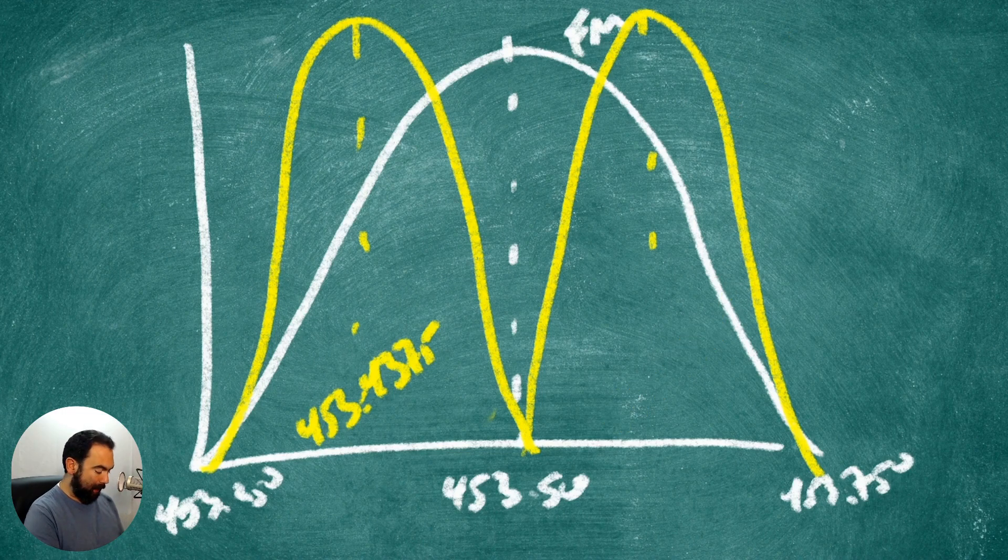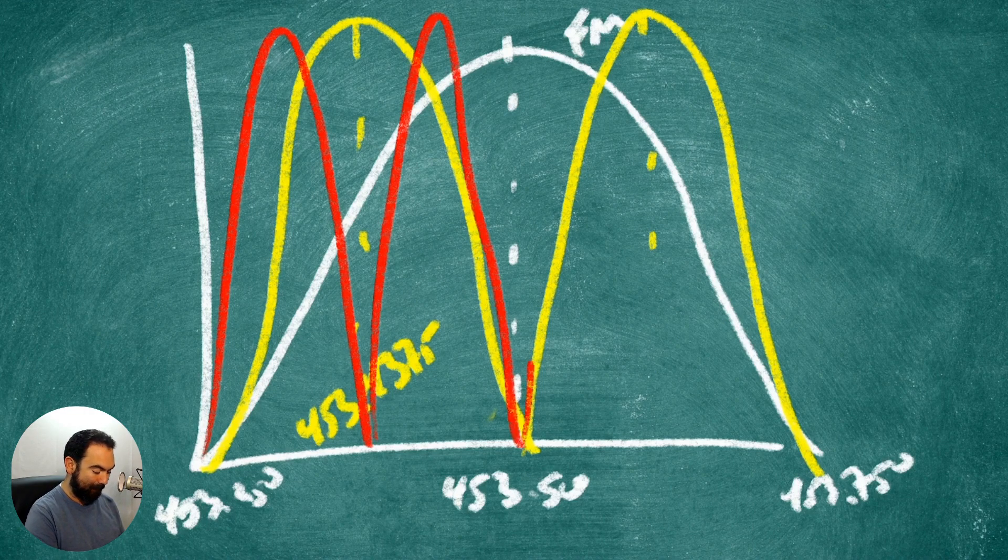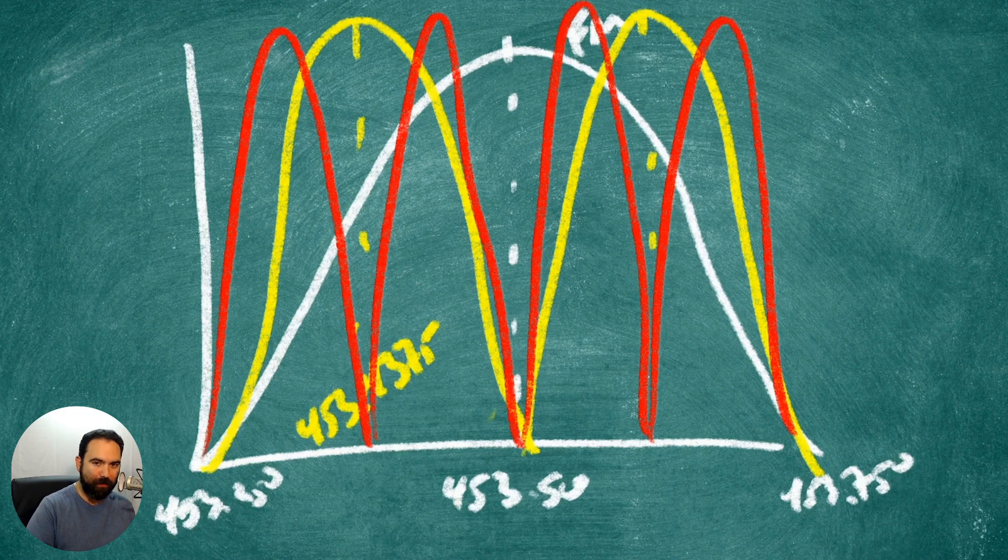And now today, they're taking this narrow band and they are splitting it in half again as a 6.25 kilohertz spacing signal, which is now the new narrow band.